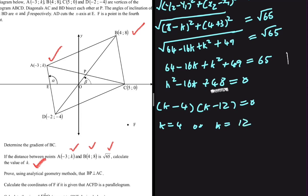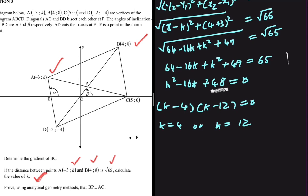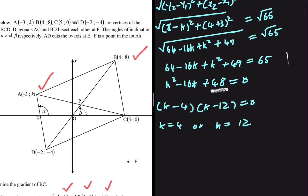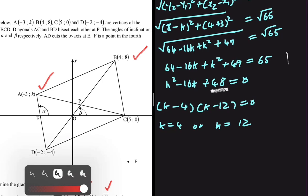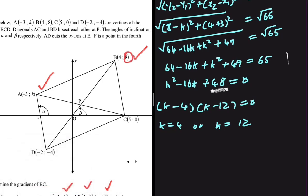Let's determine which value of k makes sense. B is clearly above A in terms of the y-value. If the y-value of B is 8, then the y-value of A should be less than 8. So k equals 12 cannot be correct, meaning the answer is k equals 4, the y-value of A.